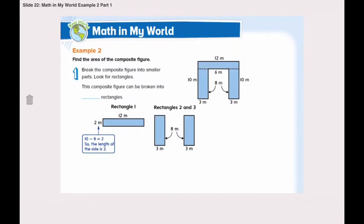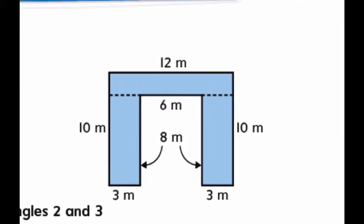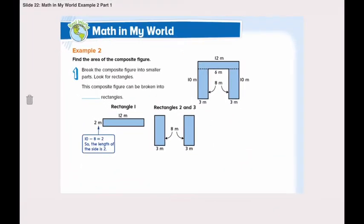Turn the page and let's do another example together. Find the area of the composite figure. Again, here we have a composite figure. When we put the dotted lines, we broke this composite figure into three parts. This composite figure can be broken into three rectangles.